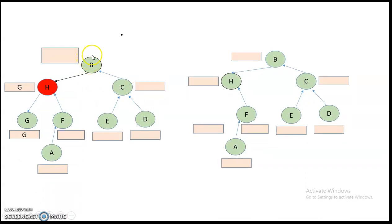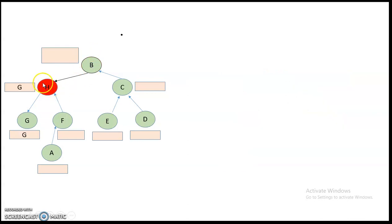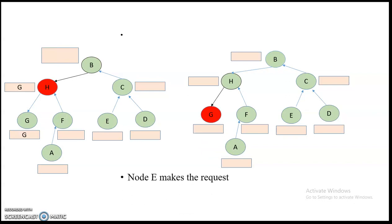After B finishes using the critical section, it sends the token to H. The queue at B, which previously contained H, is now empty. H's queue contains G, so the token is passed from H to G. H's queue is now also empty, and G holds the token.